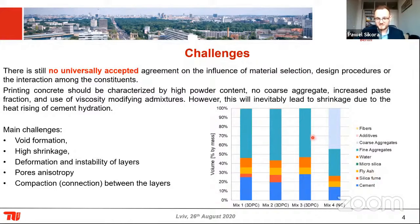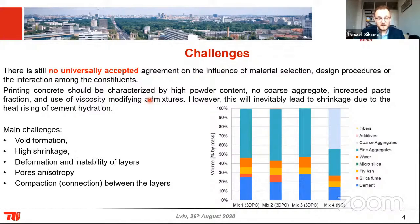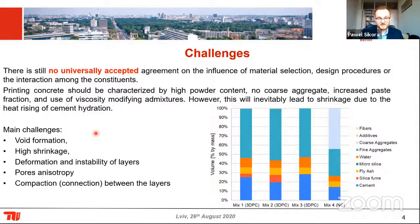In normal concrete, as you know, there is a higher amount of coarse and fine aggregate — around 70% of the mixture. Since we use so much cement and fine material, we face associated challenges: formation of voids, high shrinkage, deformation and instability of layers, coarse anisotropy — because as we print, the pores are organized in a certain order — and problems with compaction between layers.